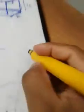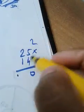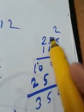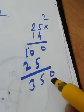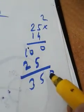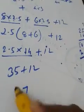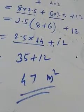Now calculating: 2.5 into 14. That is 25 into 14 equals 350, and since it is 2.5 we place the decimal point to get 35. So 35 plus 12 equals 47 square meters. Therefore, the amount of tarpaulin required is 47 square meters.